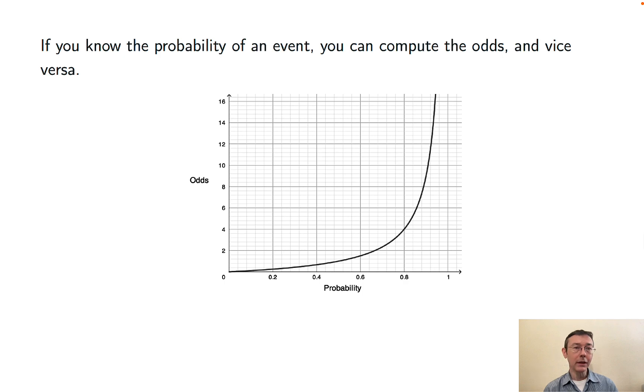Obviously, if you know the probability of an event, then you know the odds of the event and vice versa. So here's a visualization showing the relationship between probability, which runs from zero to one, and odds, which can go from zero to infinity.